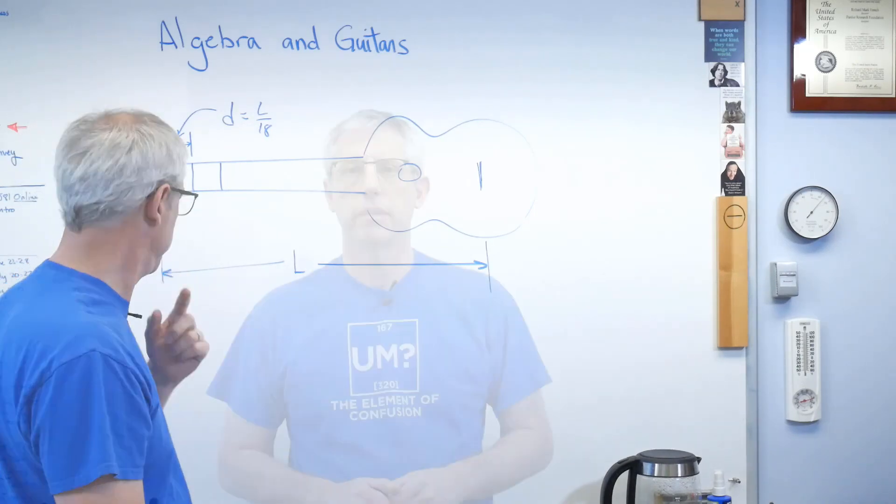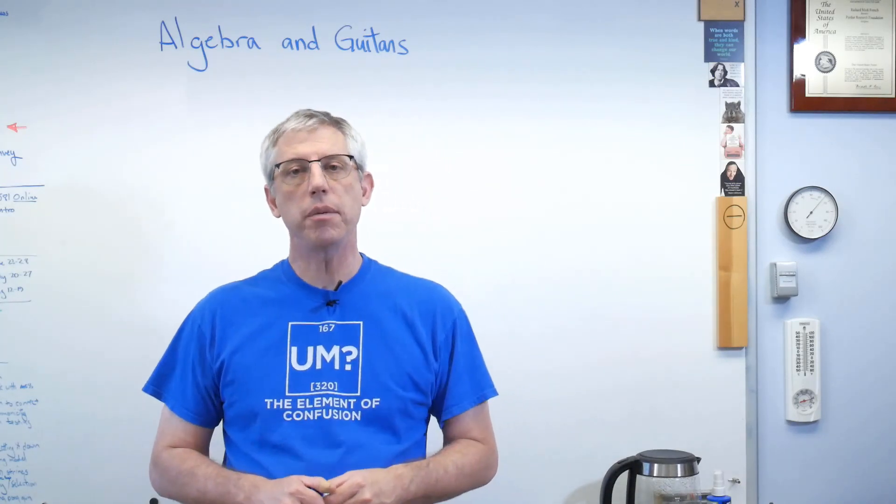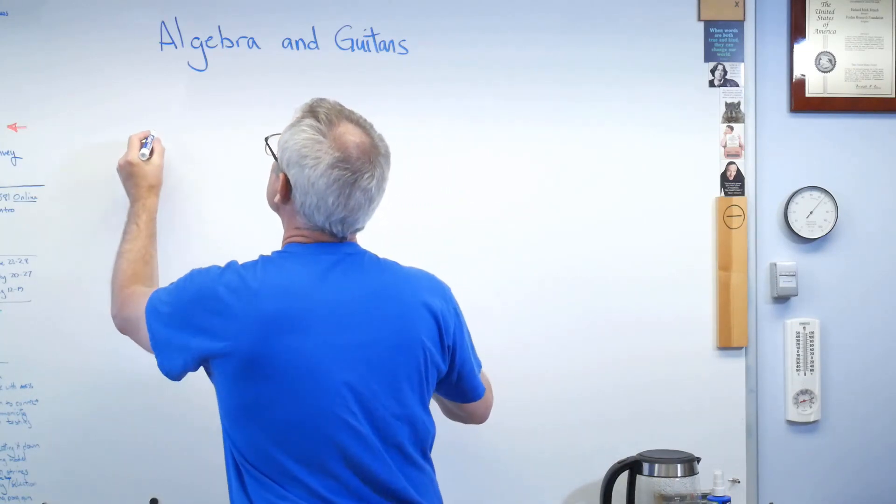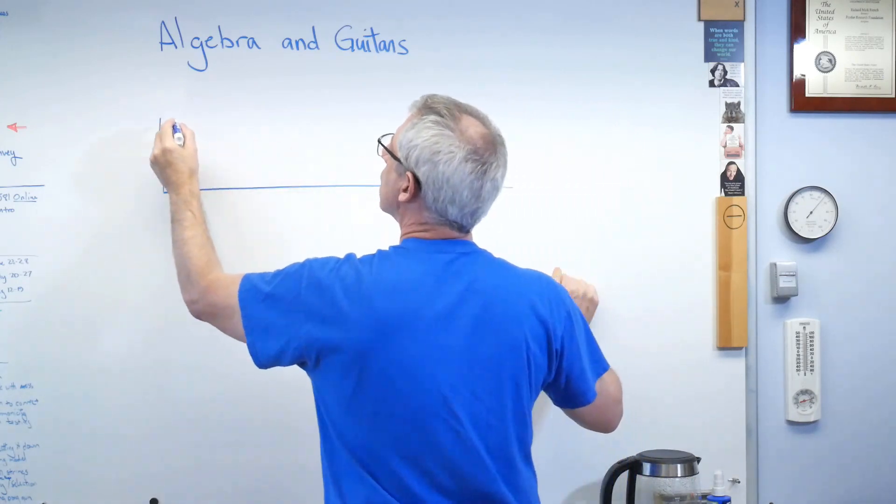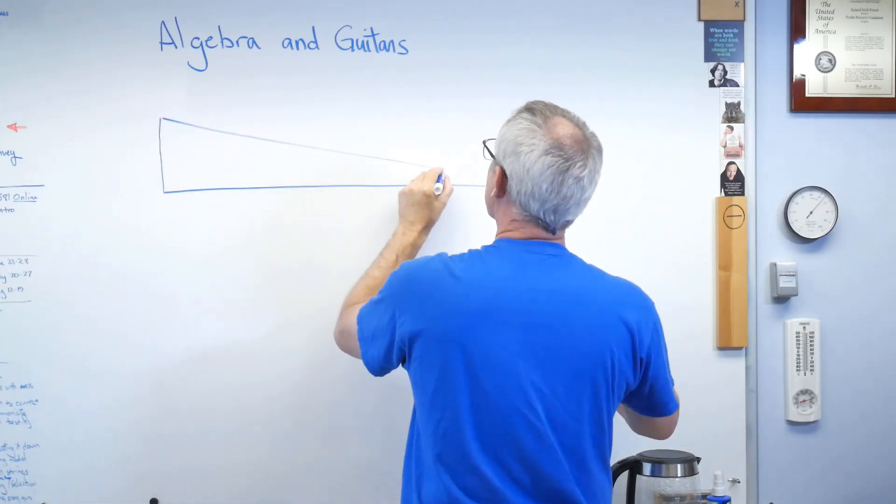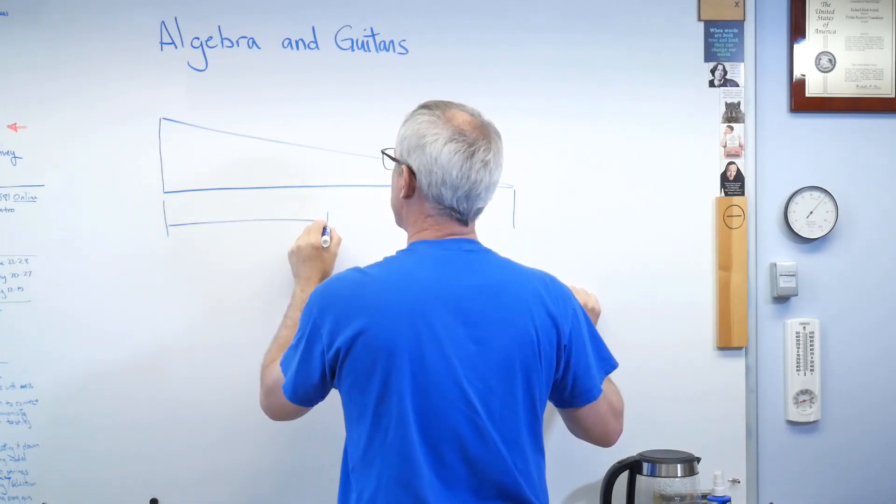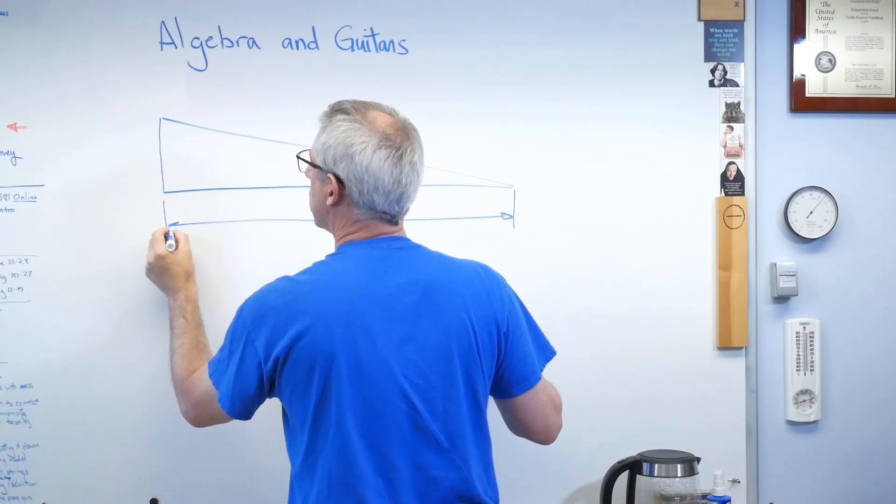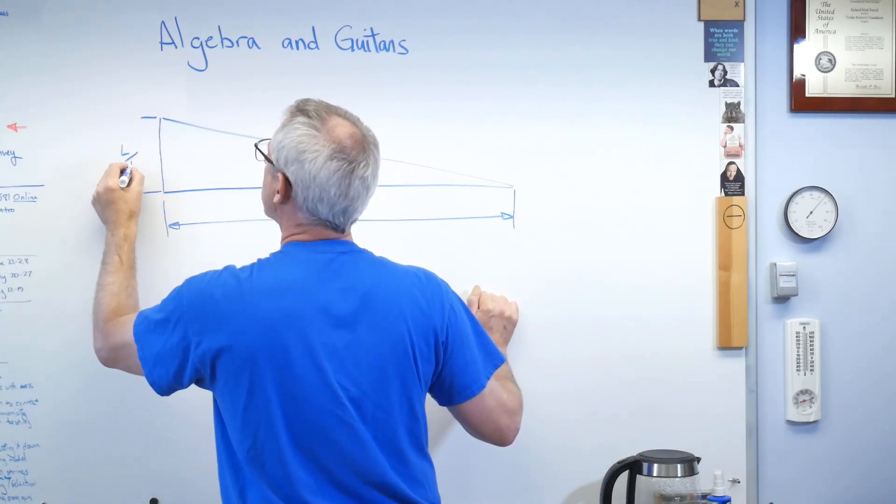Well, how do we know that? Well, there's also a geometric interpretation of the rule of 18, and it looks like this. Draw a triangle. Very shallow triangle. It looks like this. Where that's L. That's the scale length. Alright.